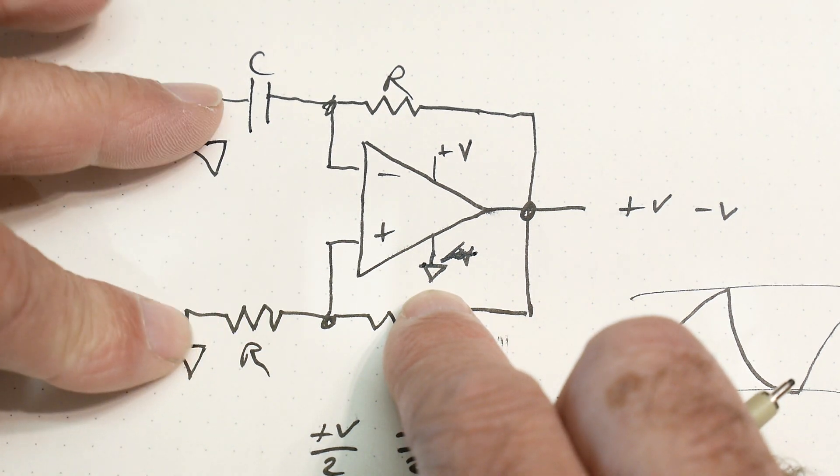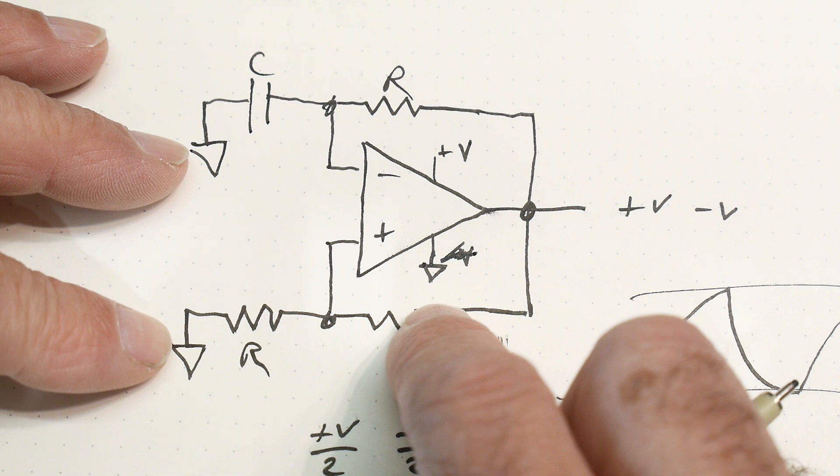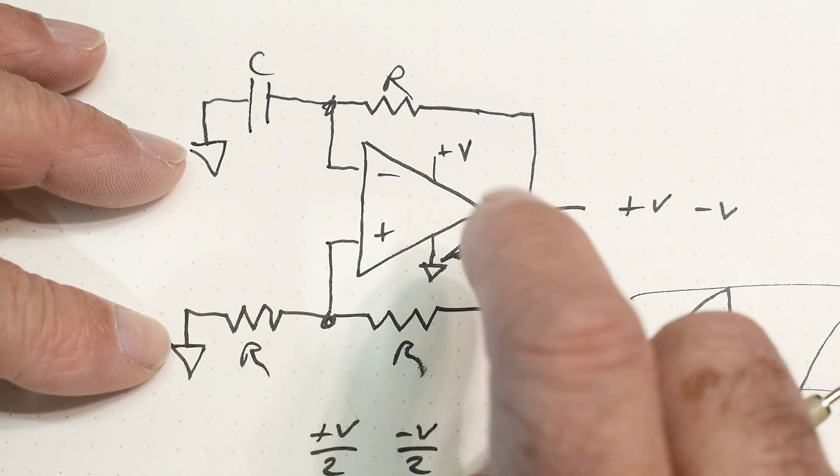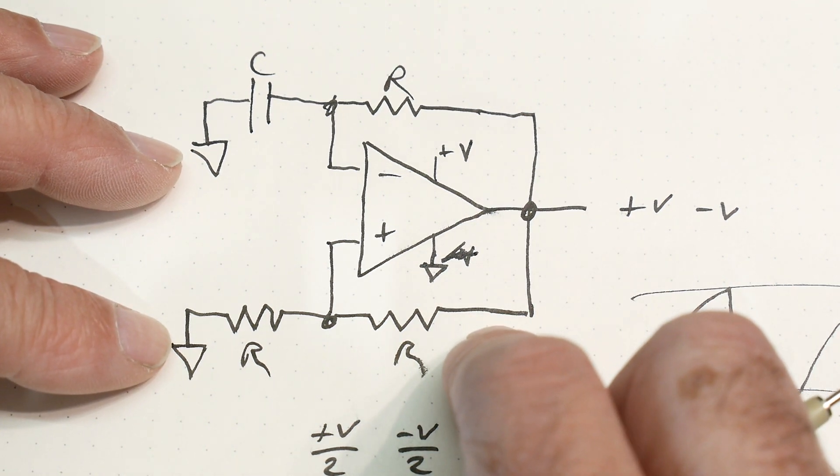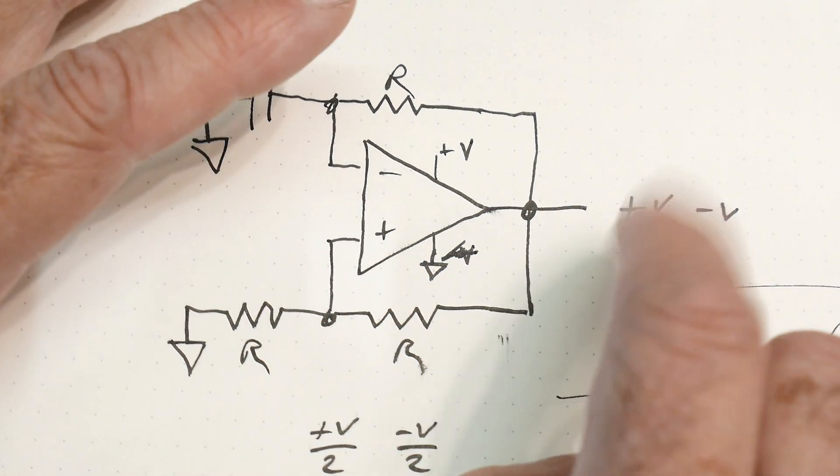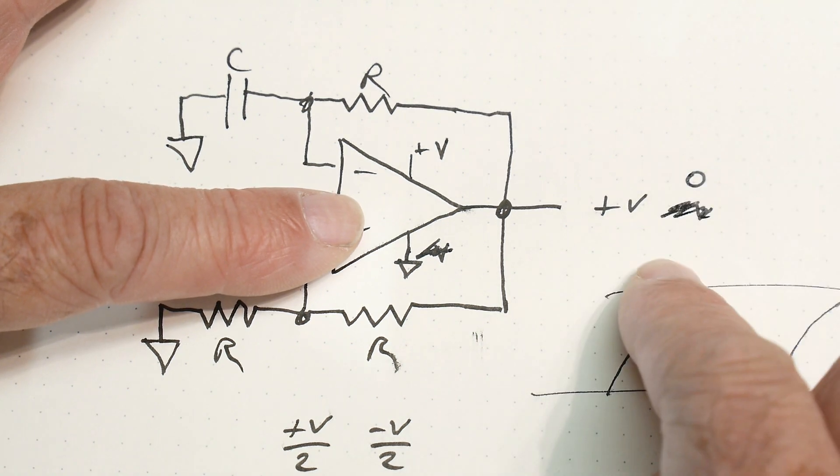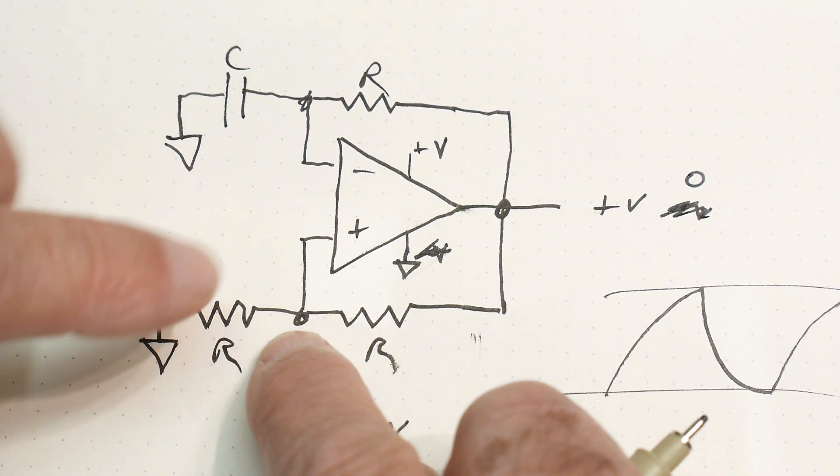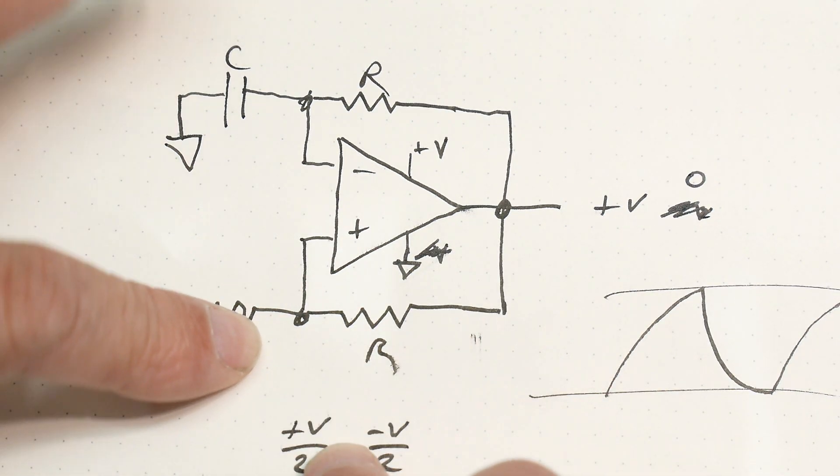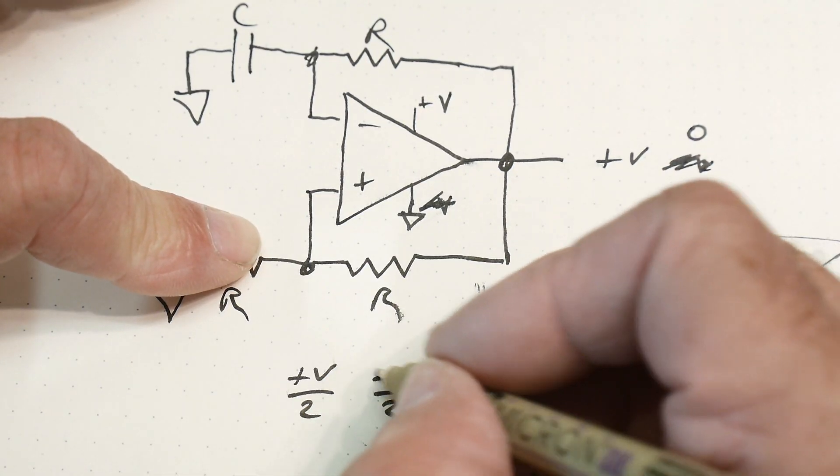Well, then these are ground as well. So it's not going to operate very nicely because what are the states the output can be? Well, it can be plus V or it can be zero. And so what can this node be? Well, it can be plus V over 2, but it can also be zero. This then turns into zero.